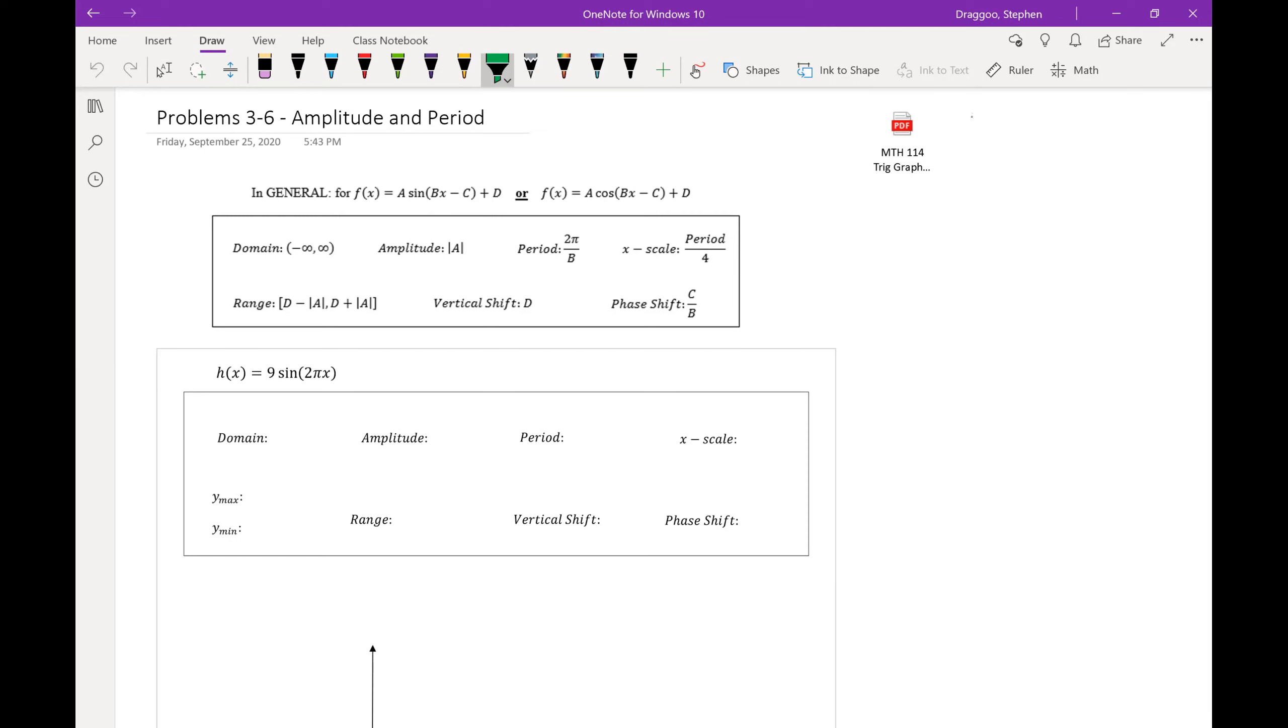So to graph 9 times sine of 2πx, stuff that we know, no matter how we transform these graphs, that domain is always all real numbers. Now our amplitude, we know is just the absolute value of a. So in our case, 9.